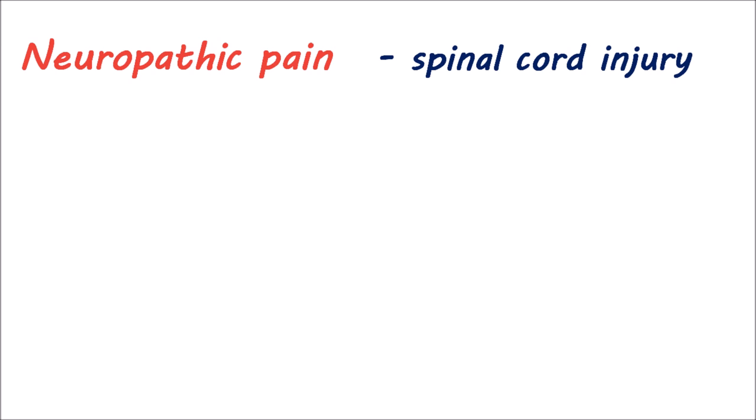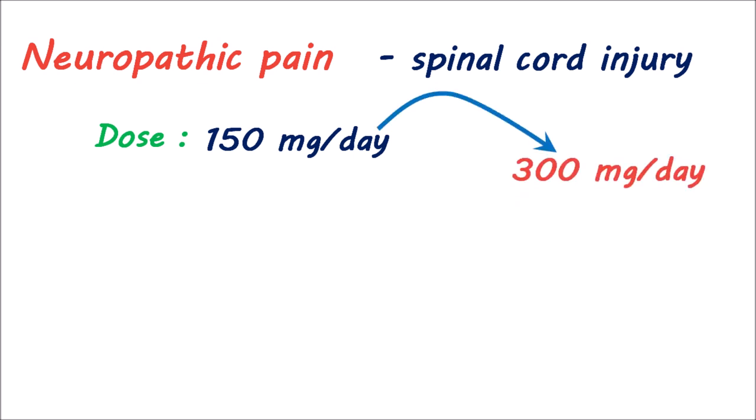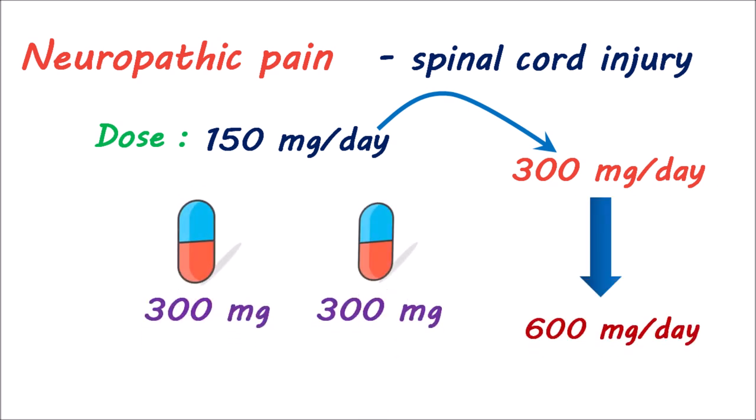In patients with neuropathic pain associated with a spinal cord injury, pregabalin is started at 75 mg twice daily. If significant reduction of pain is not observed within one week, the dose can be increased up to 150 mg given twice daily, for a total dose of 300 mg per day. If sufficient pain reduction is not observed even after 2-3 weeks of treatment, further dose increments can be made up to the maximum dose of 600 mg per day, with 300 mg administered twice daily.